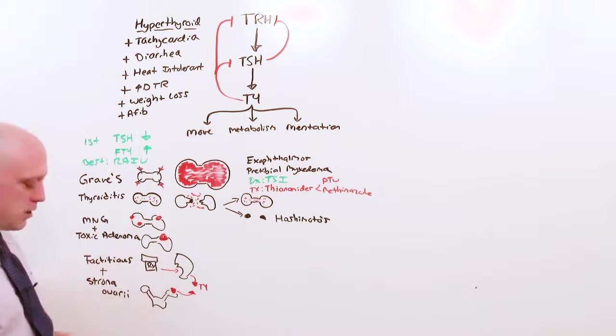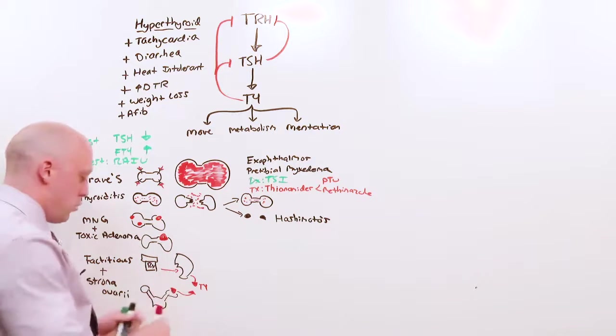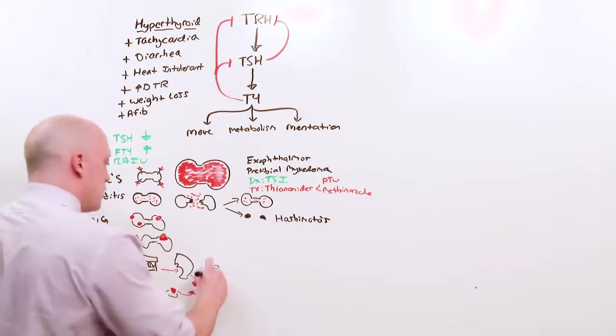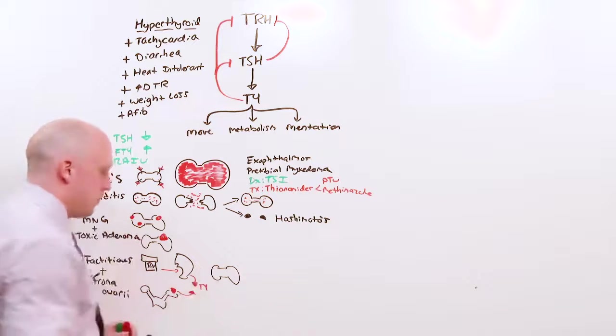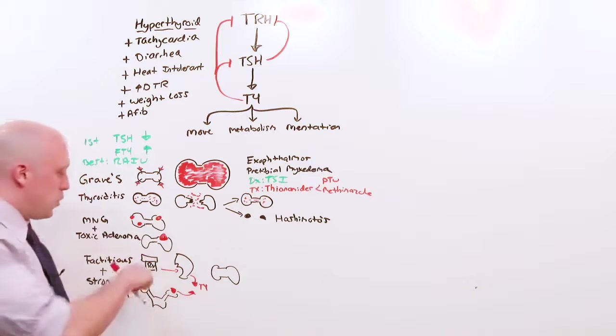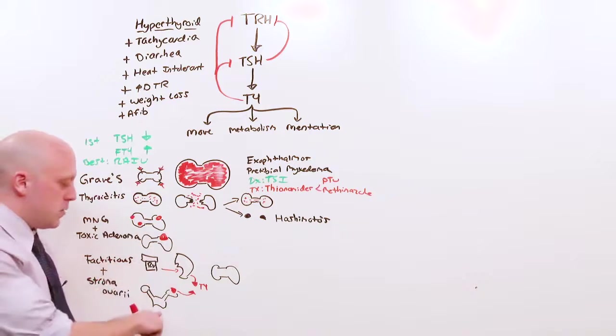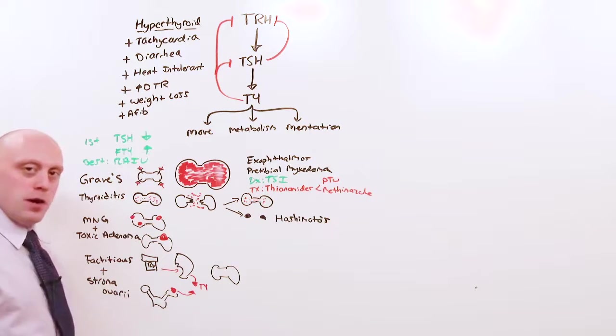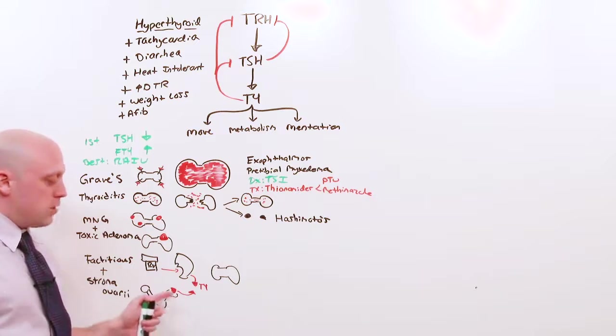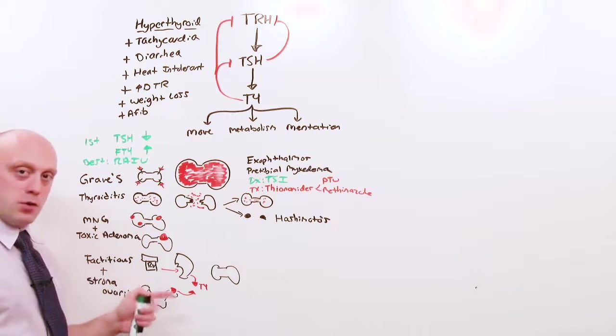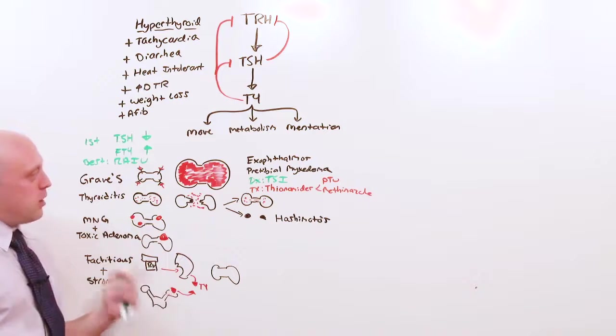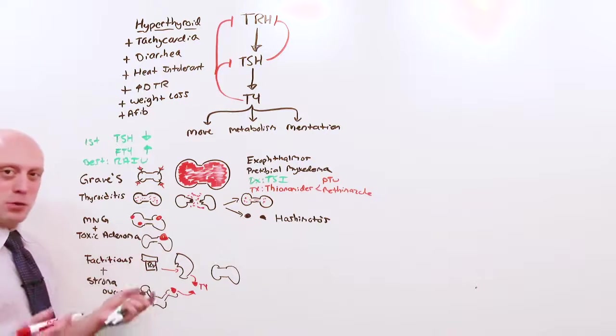Because in either case, T4 is coming from somewhere else, you're going to have a completely cold thyroid. What you'll have to do before you confront her about factitious disorder is get a CT scan of the stroma ovarii, looking at the ovaries, making sure she doesn't actually have a surgical intervention ready. You'll notice other than for Graves' disease, I didn't talk about treatment. I did that on purpose because I want to talk about treatment as it relates to the severe illness, thyroid storm.